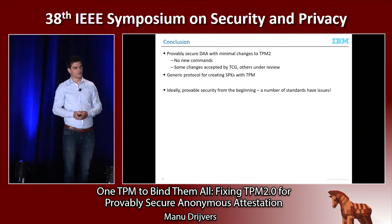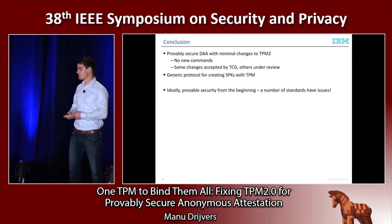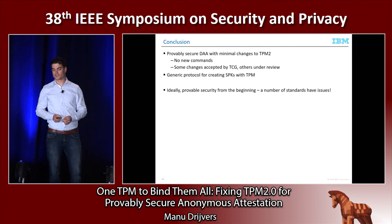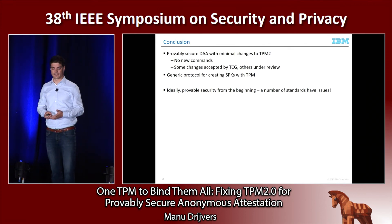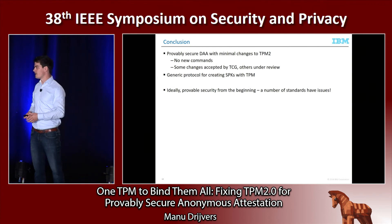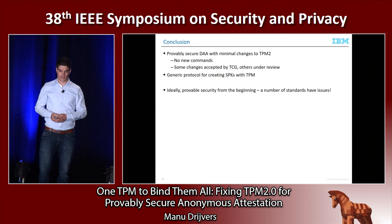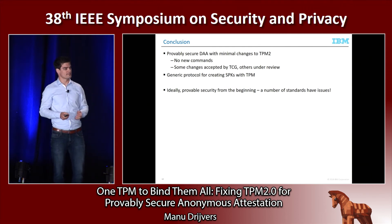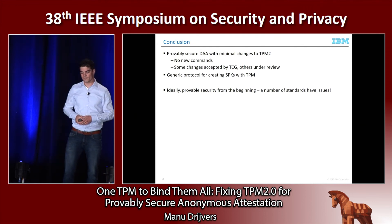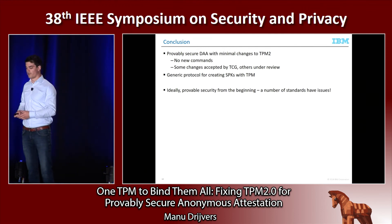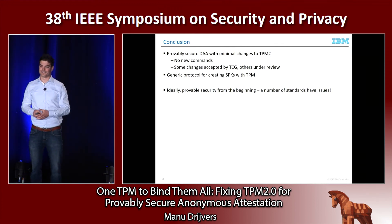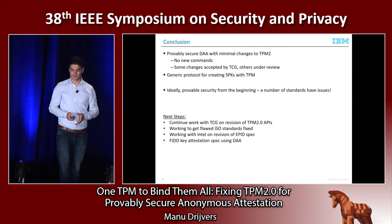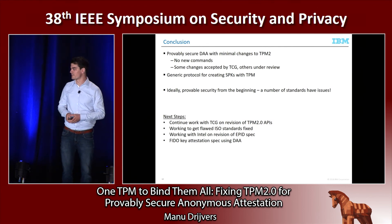In conclusion, we showed that we can do provably secure anonymous attestation — both under the LRSW assumption and the strong Diffie-Hellman assumption — with minimal changes to TPM 2.0. We added no new commands; we only did small modifications in two commands. We went to the TCG, the body that standardizes TPM, to show them these results. They've already accepted some of our proposed changes and others are under review. We hope they will all be accepted eventually. One result we think is interesting is the class of zero-knowledge proofs that we can prove with this TPM — that could be useful for other protocols as well. Finally, many standardized schemes in ISO and other places are not provably secure, and we should focus more on provable security before standardization.